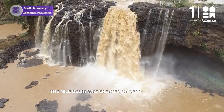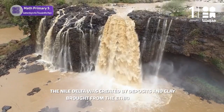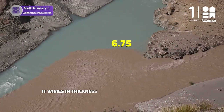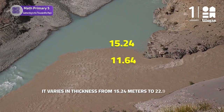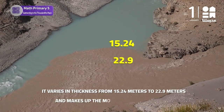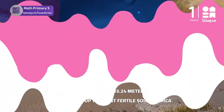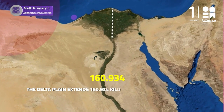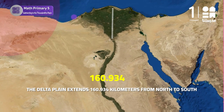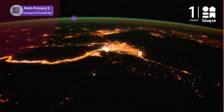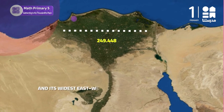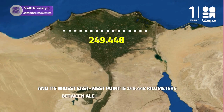The Nile Delta was created by deposits of clay brought from the Ethiopian Plateau. It varies in thickness from 15.24 meters to 22.9 meters and makes up the most fertile soil in Africa. The delta plain extends 160.934 kilometers from north to south, and its widest east-west point is 249.448 kilometers between Alexandria and Port Said.